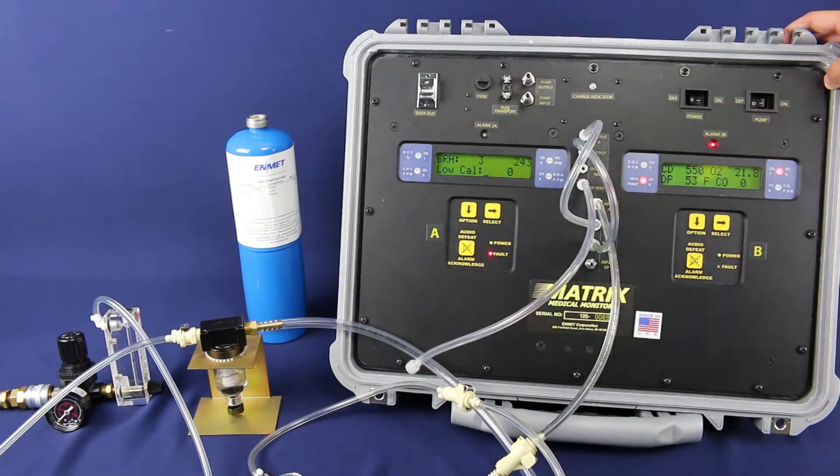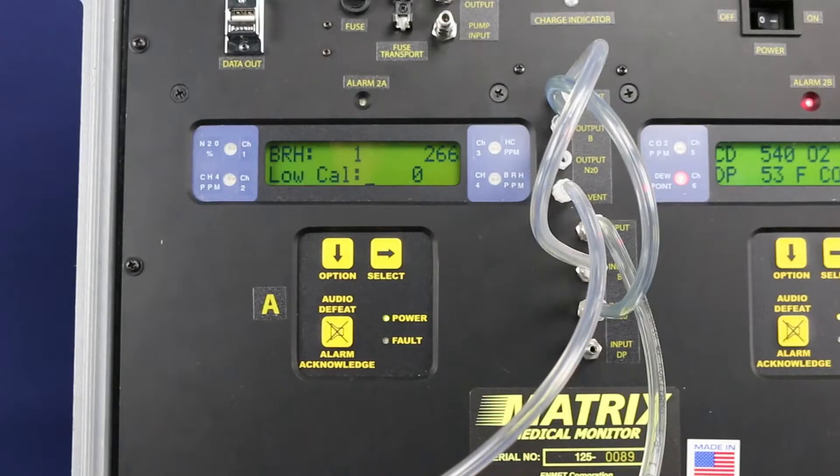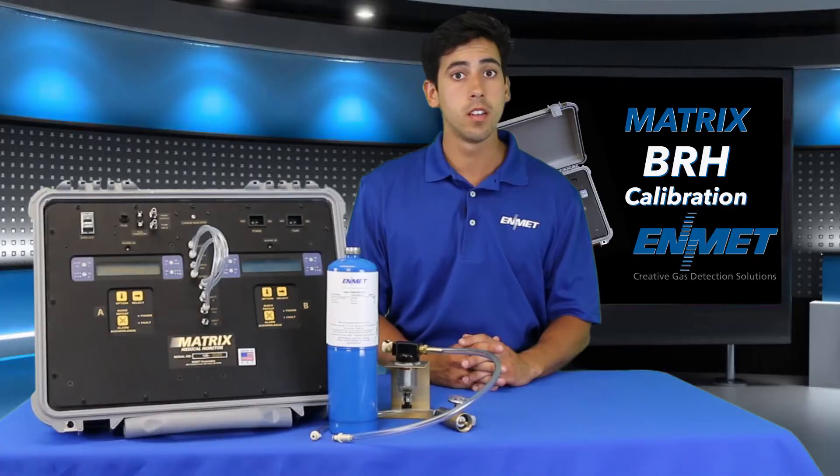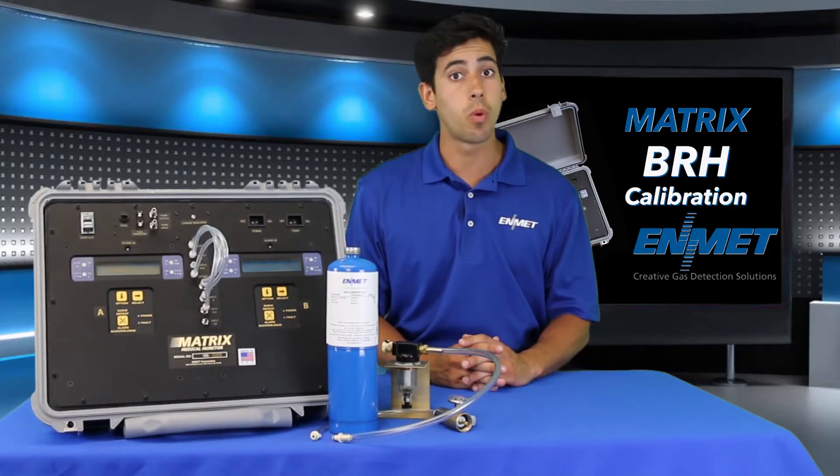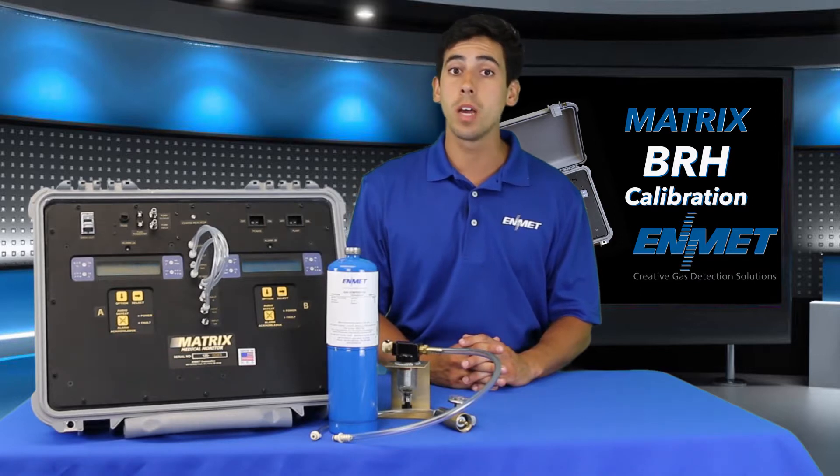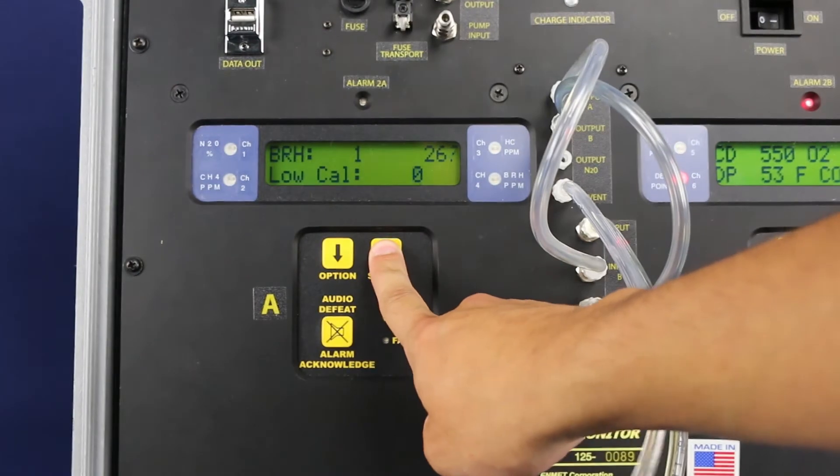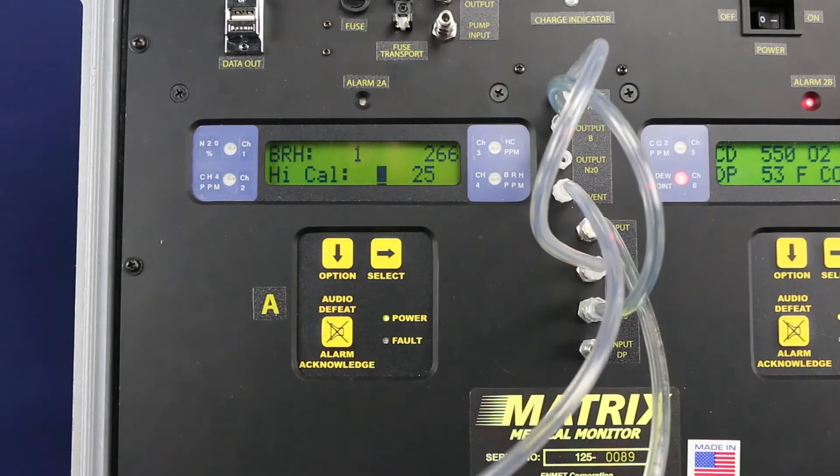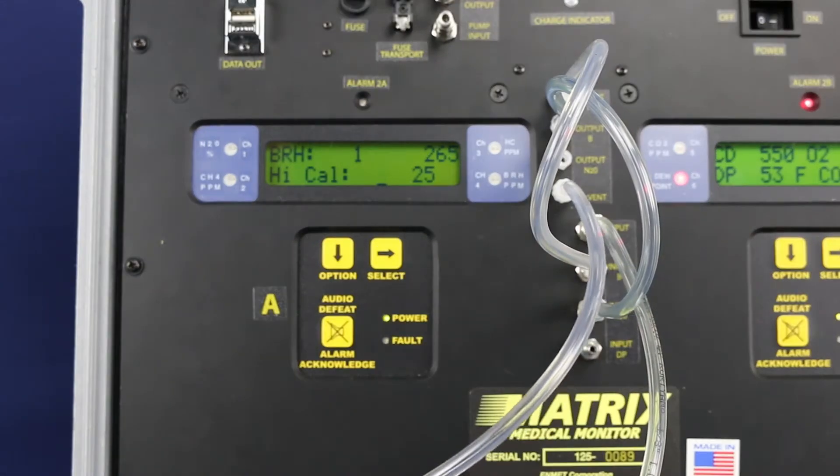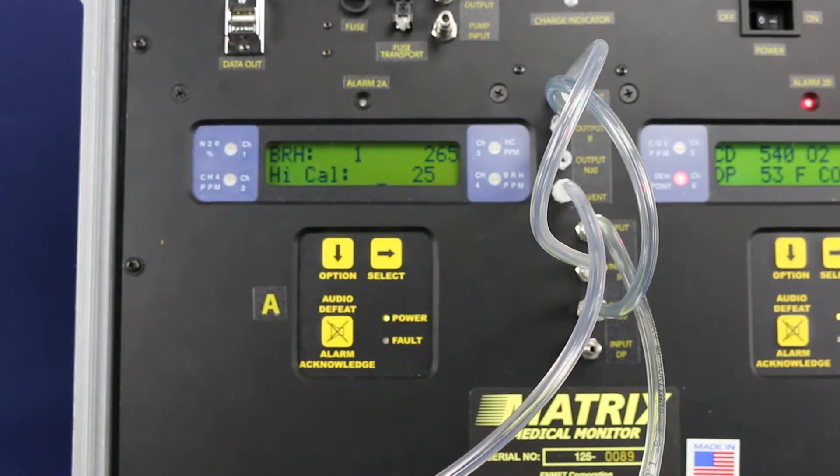After pressing the select button, you will see low cal on the bottom row of the display. Since the instrument has been connected to the bubbler assembly for 20 minutes, you will now accept the zero calibration. Press select to move the cursor over to the right, and when it gets to the last digit, press select one more time to accept the zero cal.